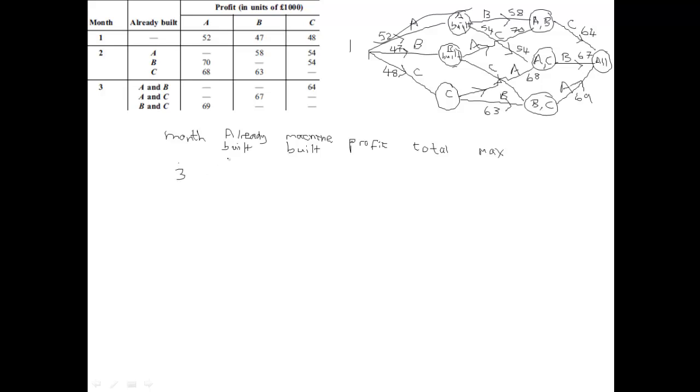In the third month, we have three possible scenarios. We've got A and B, A and C, and B and C. Those are the three possibilities of what's been built already. If A and B have been built, then obviously C needs to be built. If A and C have been built, B needs to be built. And if B and C, A. If we look across to our table here, we can see the amounts. We're working backwards from here. So C 64, B 67 and A 69. These are our state variables. We need to include them all as maximums because there's no choice.